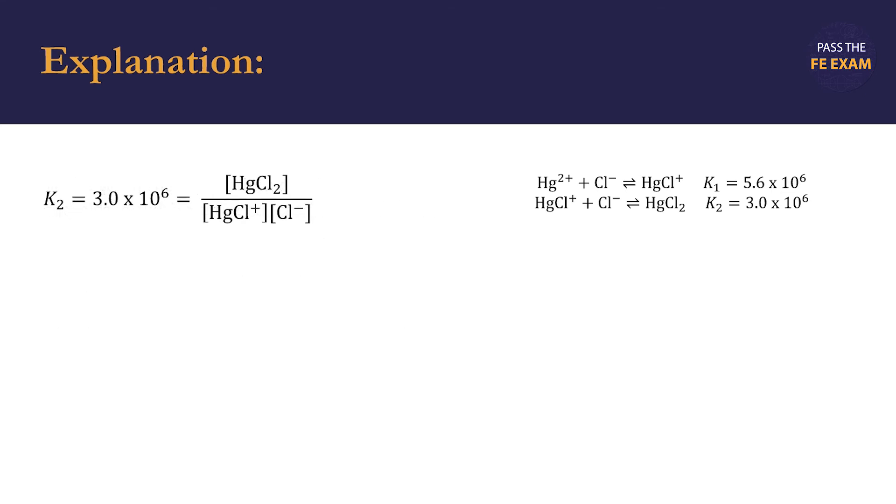Since our chemical equations are in equilibrium, we know that the equilibrium constant for the equation is equal to the concentration of the products divided by the concentration of the reactants. The products are on the right-hand side of the equation, and the reactants are on the left-hand side of the equation.